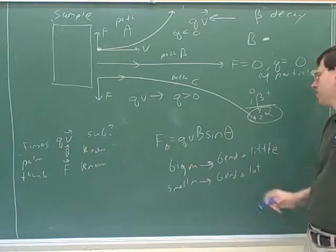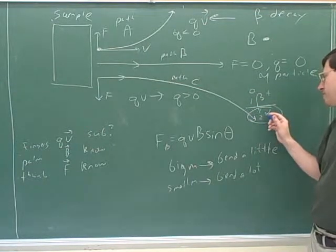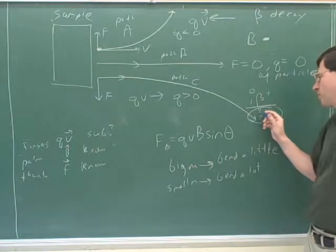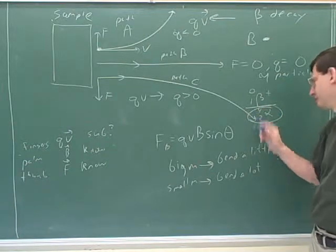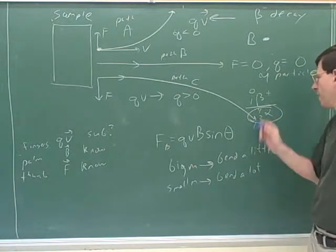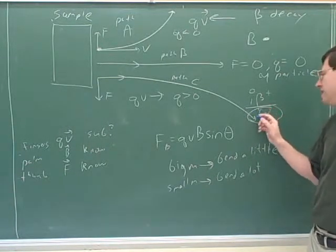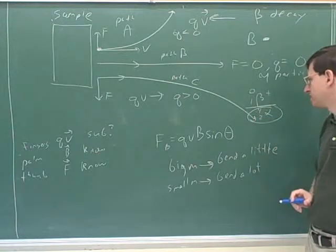And two is only twice as big as one. So the greater force here would be swamped by the fact that this has way more mass. So I would still expect the alpha particle to get much less bending. The alpha particle should get much less bending because it has way, way more mass. Four is way bigger than approximately zero over here.